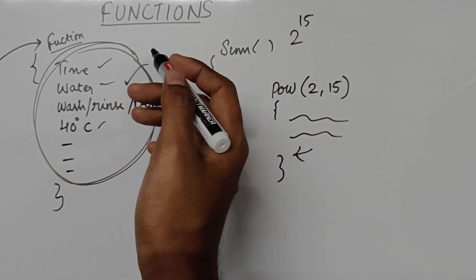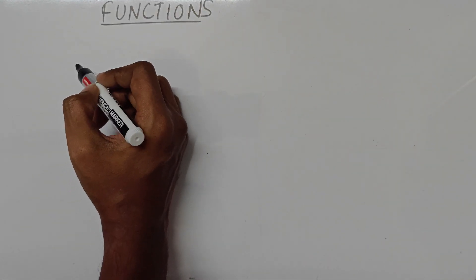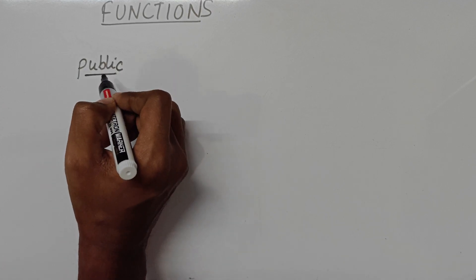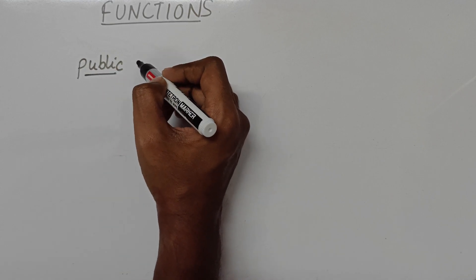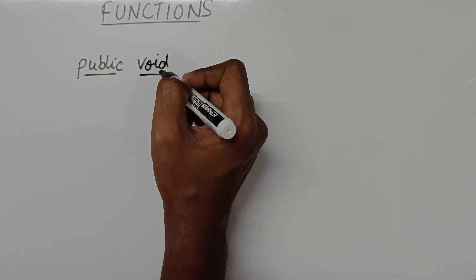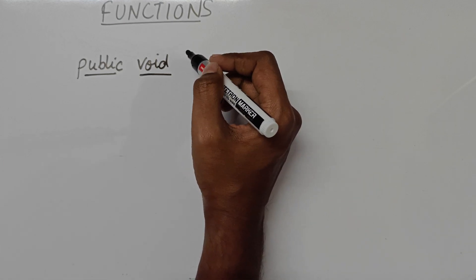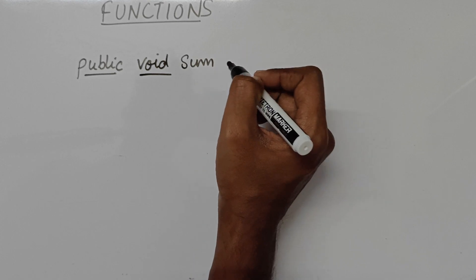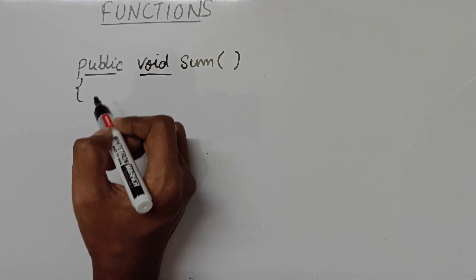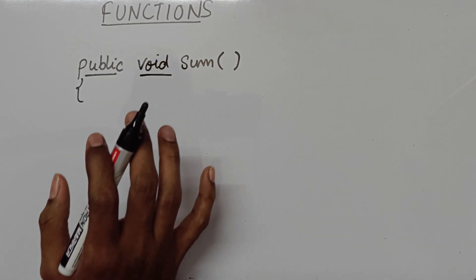So now let's see the syntax of functions in Java. In Java, this is how you write a function. First, let me write `public` — I will tell you more about this in future videos, but for now just remember to put `public`. Then there is `void`, which I will explain in this same video. And then there is a name for this function. Since this function is going to find the sum of numbers, I'll call this function `sum`, with opening and closing brackets and opening and closing parentheses.